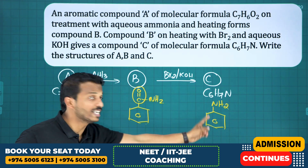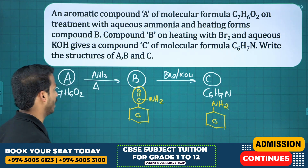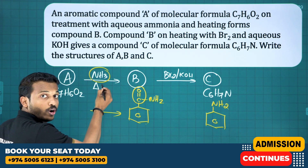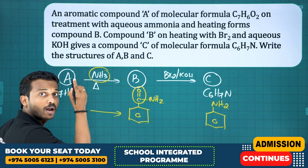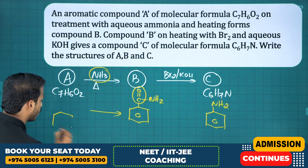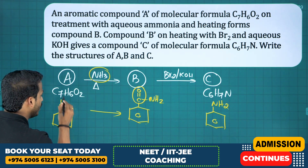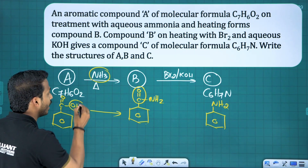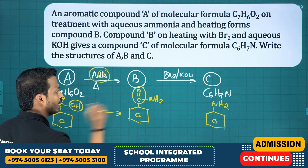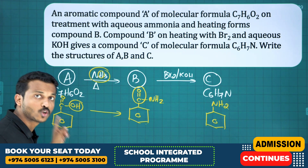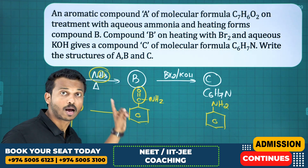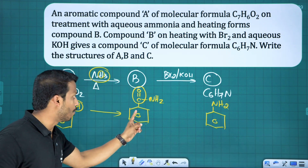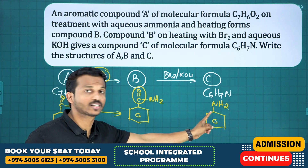C is aniline, B is benzamide. To get benzamide by heating with ammonia, compound A must be a carboxylic acid — benzene with COOH, that is benzoic acid. The OH and H are removed and NH2 is added, so A is benzoic acid, B is benzamide, and C is aniline. Acid heated with ammonia gives amide; amide on Hofmann reaction gives one-carbon-less amine.